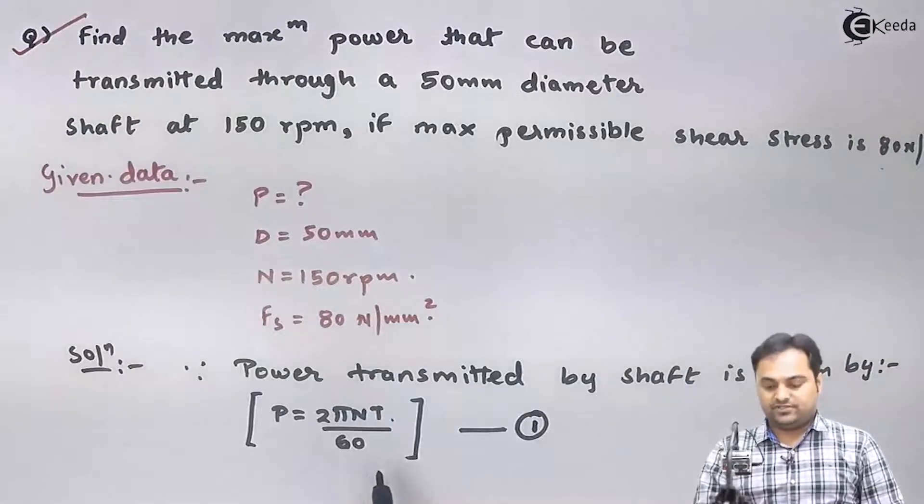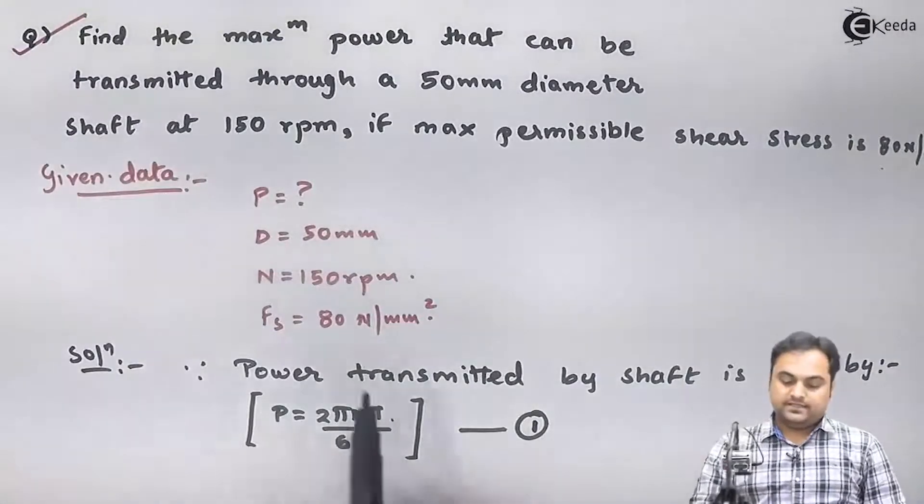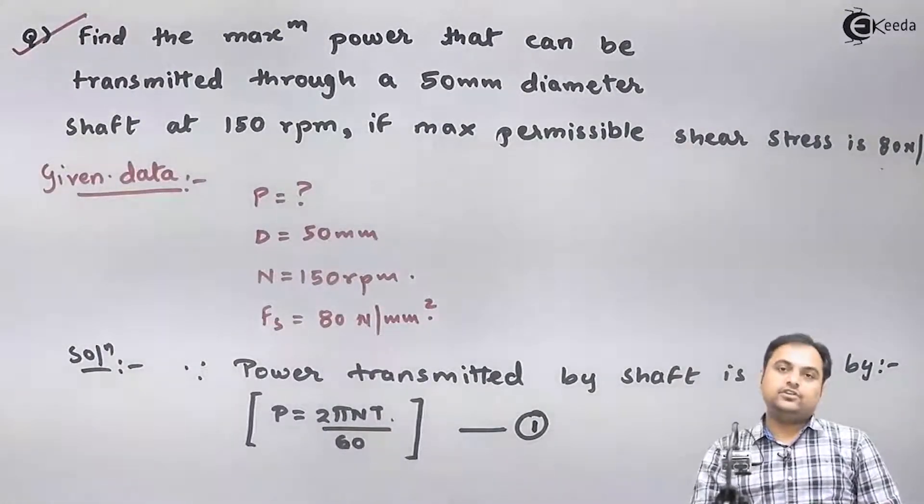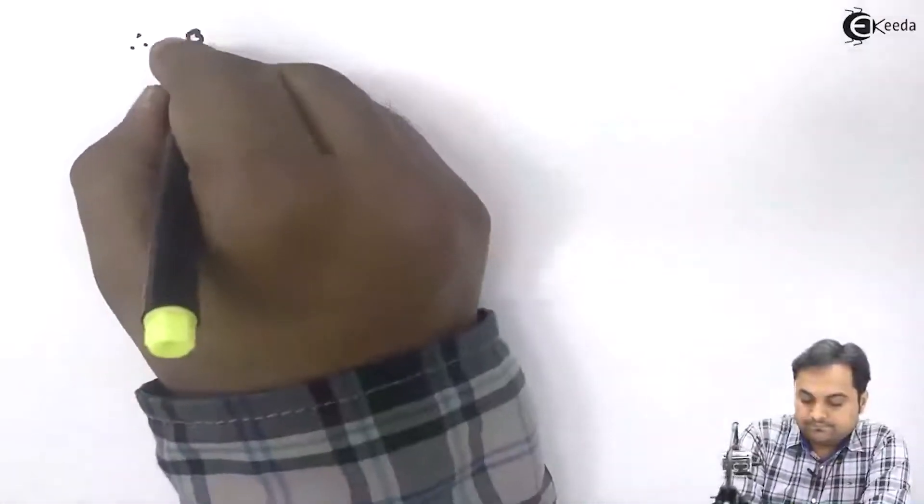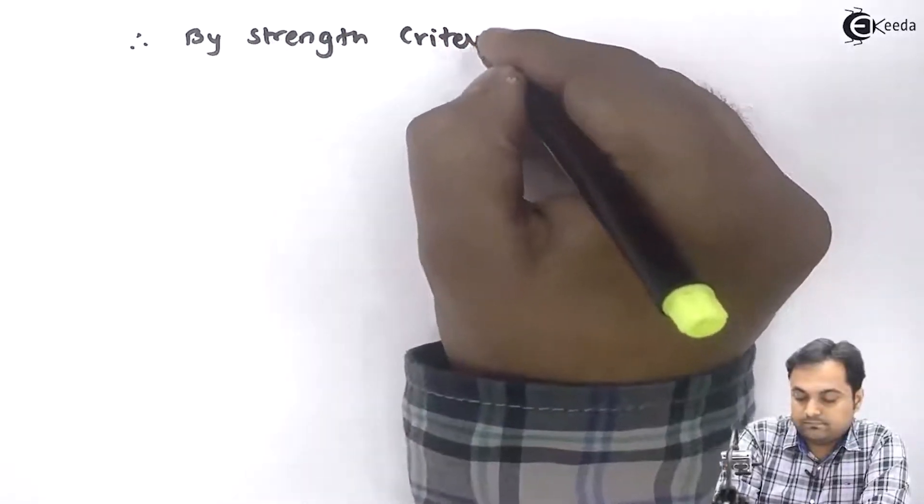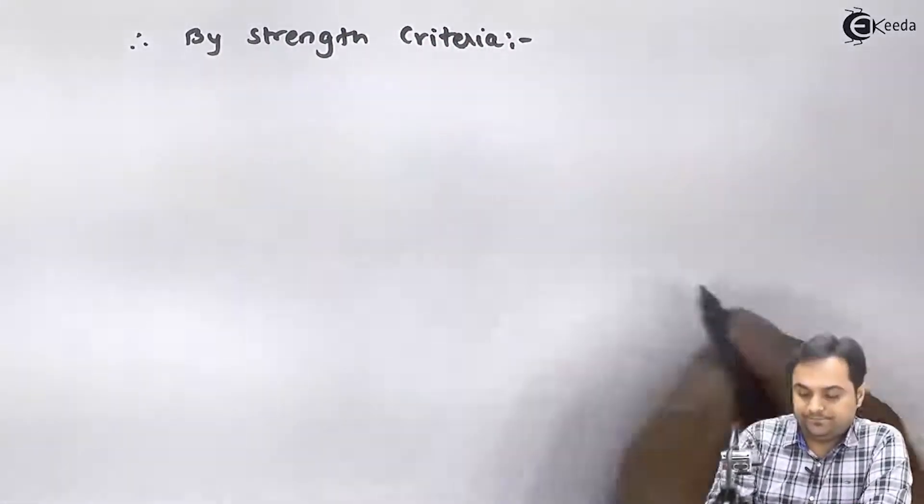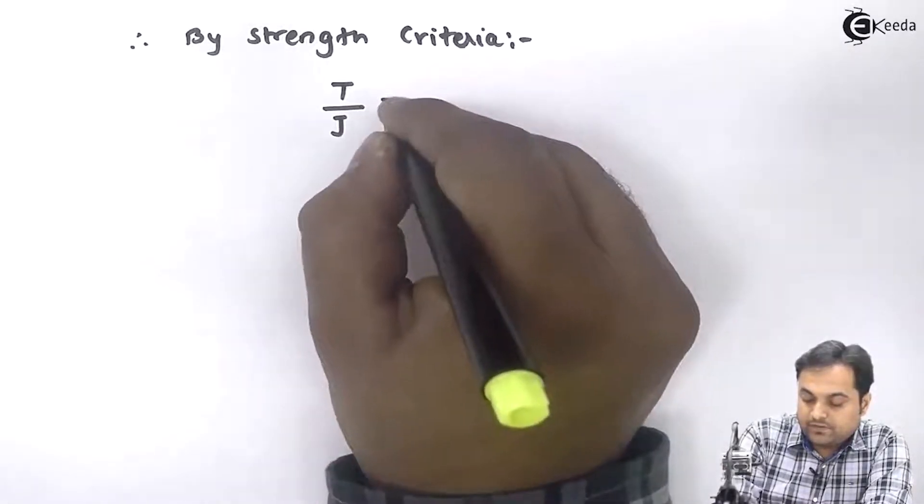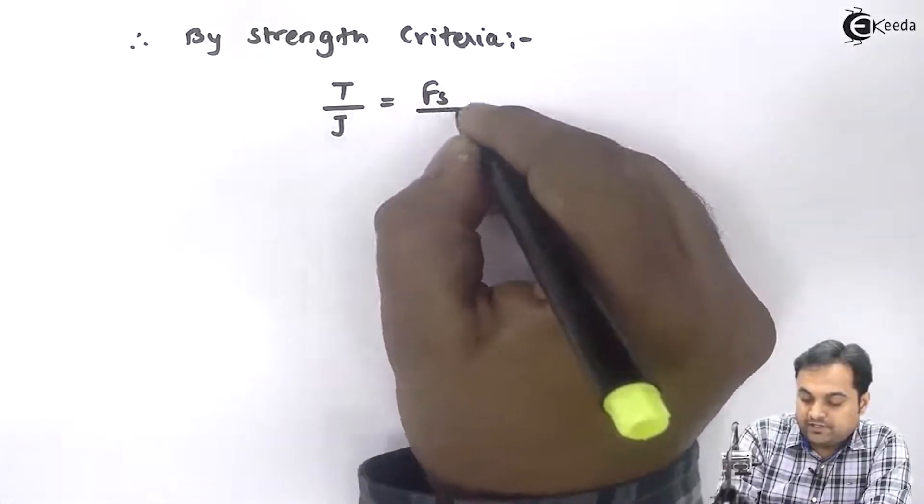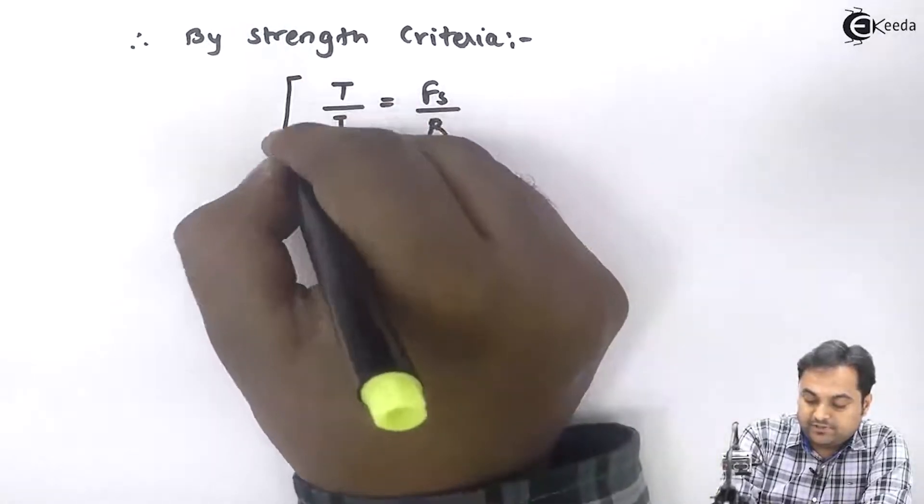Now let us try to get the answer for this torque. Since FS is given, we will use the strength criteria: by strength criteria, T upon J is equal to FS upon R. I am using this criteria because FS is given.